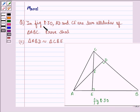The question says, in figure 8.30, that means this figure, AD and CE are two altitudes of triangle ABC. Prove that triangle ABD is similar to triangle CBE.